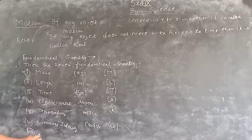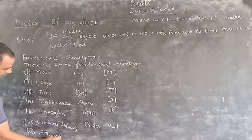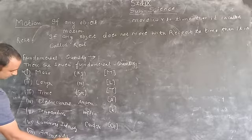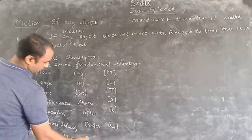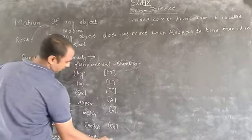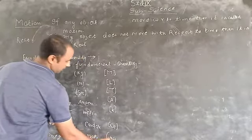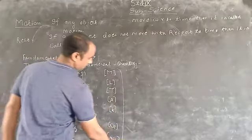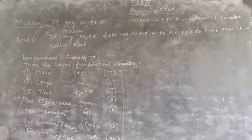Amount of substance is represented in mole. We have to remember these seven fundamental quantities.